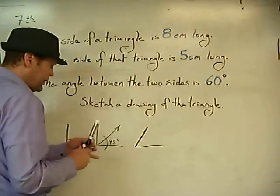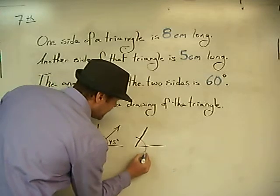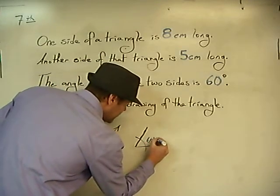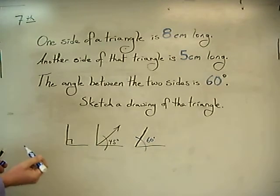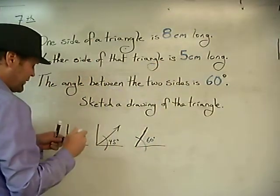That's going to be the first step. So once we have our 60 degrees, the next thing that we need is something that's eight centimeters and something that's five centimeters.